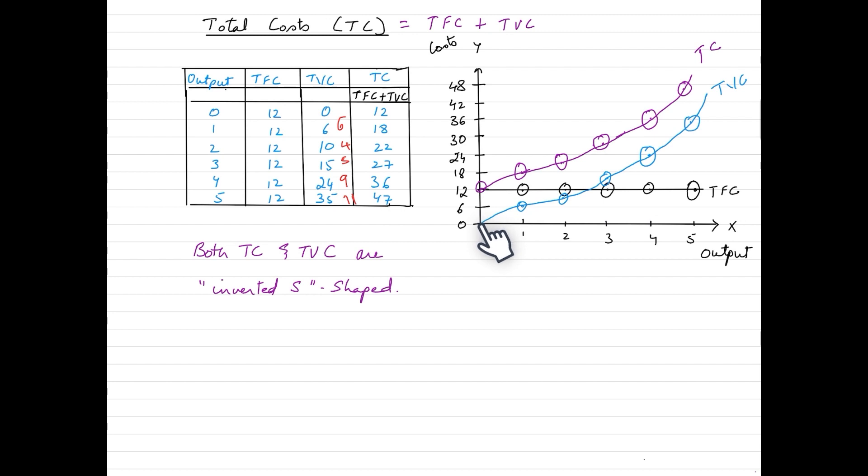We add 12 to 0, we get this. We add 12 to 6, we get 18. We add 12 to 10, we get 22. All we are doing is we are adding the fixed cost component to the TVC curve and we arrive at our TC curve.